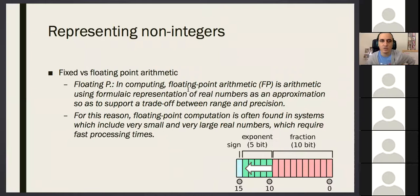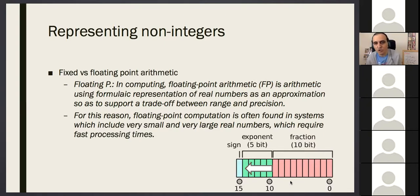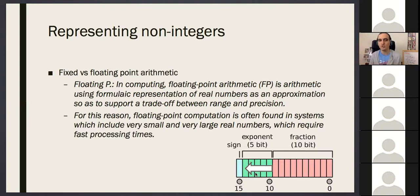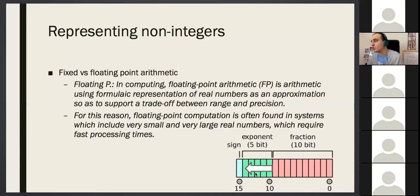In floating point arithmetic, the dot position changes. If the dot moves left, the right-hand side has more bits so you can represent very small numbers. If you move the dot to the right, you can represent very large magnitudes. By controlling the position of the dot, you decide how large a number you're representing or how accurate. For scientific operations we need floating point numbers. This was the introduction to binary numbers — any questions?